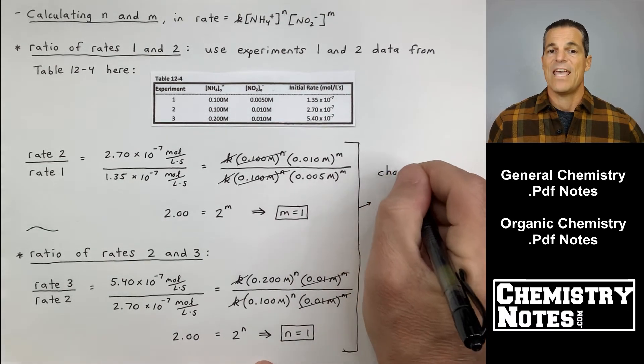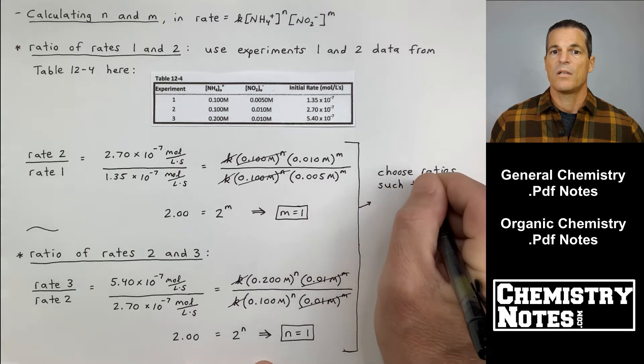I've used experiments one and two to find M equals 1. Now, if I use the rates two and three from experiments two and three, I do rate three divided by rate two. I could have also done rate two divided by rate three. I do 5.40 times 10 to the minus 7 over 2.70 times 10 to the minus 7 equals K to the NH4+ to the N times NO2- to the power of M. I put in the appropriate values for the experiments above. Once again, I've gotten an N variable equal to 1.